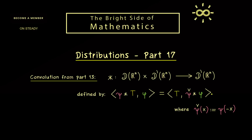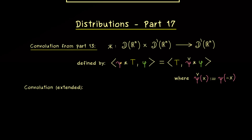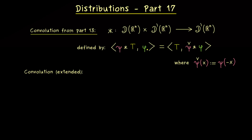So this is the whole definition of the convolution of distributions where the first part has to be a test function — or it can also be a distribution, but then it has to be a regular distribution represented by a test function. Therefore, the question is: can we extend this definition such that we can put in two distributions without regularity? And this is exactly what we will do today.